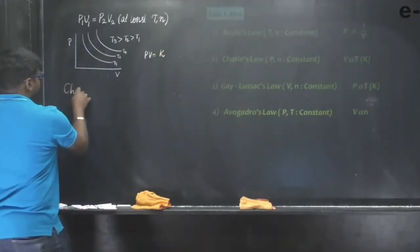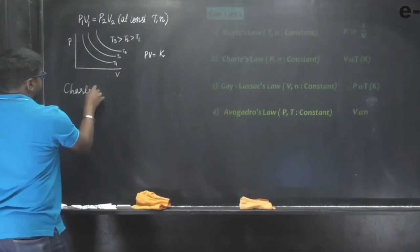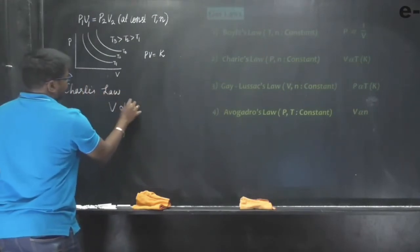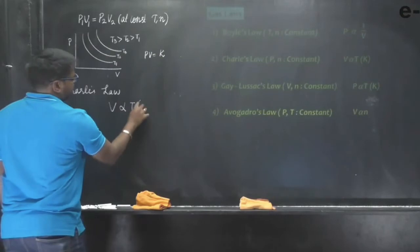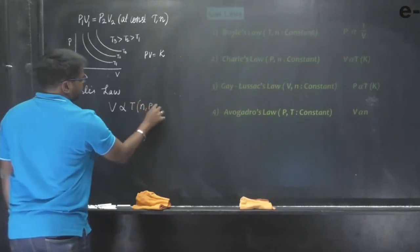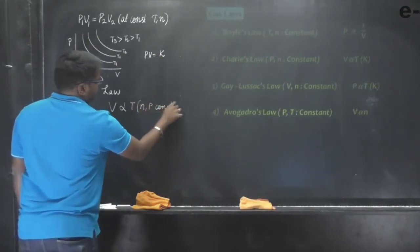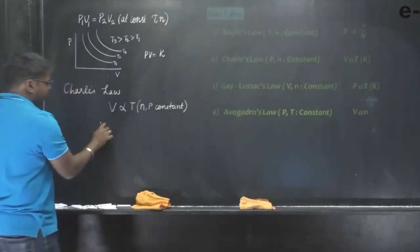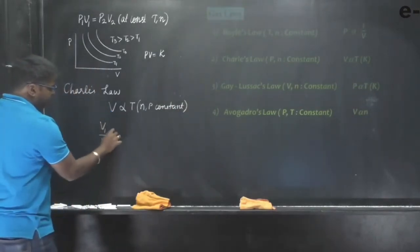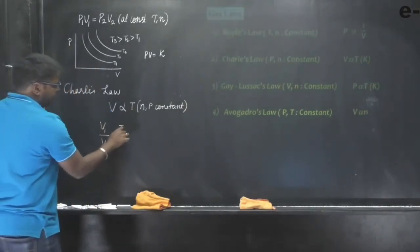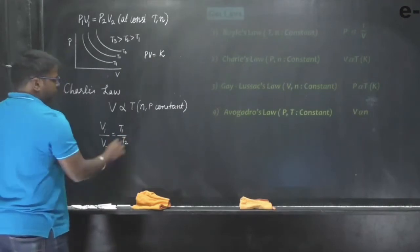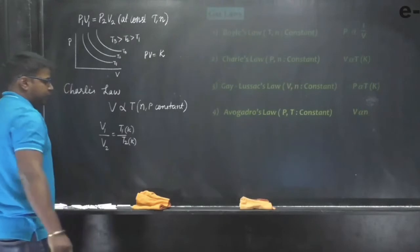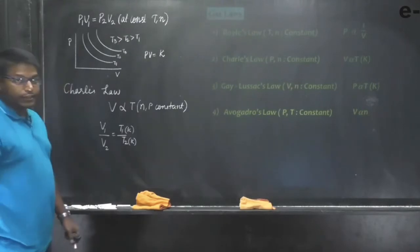In the case of Charles' law, volume is directly proportional to temperature for a fixed number of moles and constant pressure. From here we can write V1/V2 = T1/T2, but make sure that the temperatures are always mentioned in the Kelvin scale, not in the degree centigrade scale.